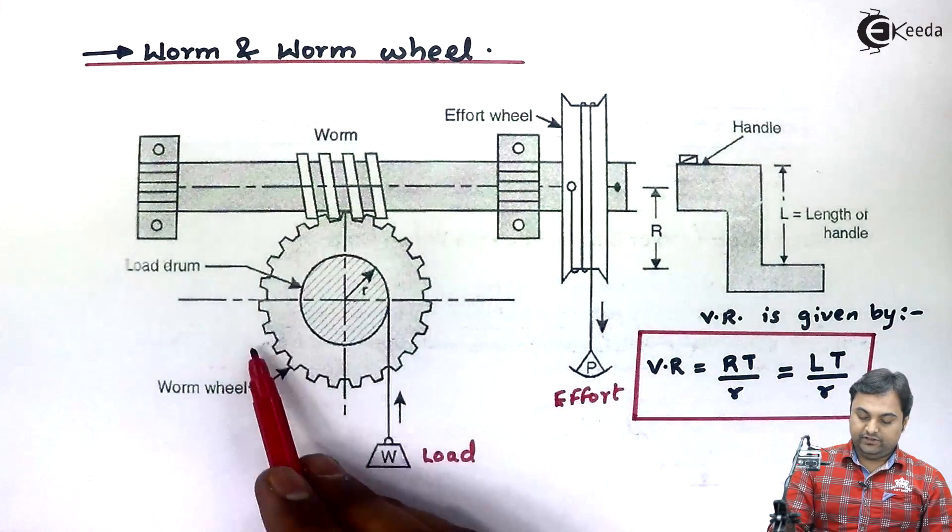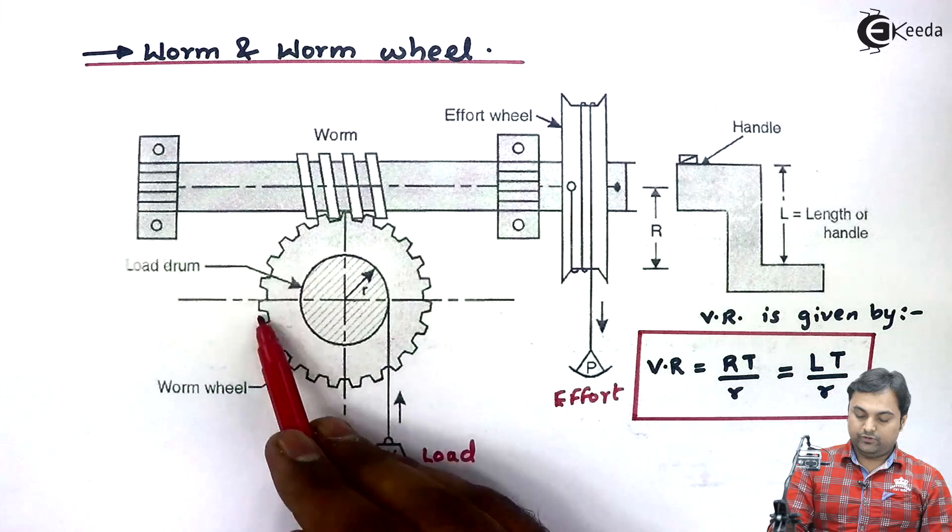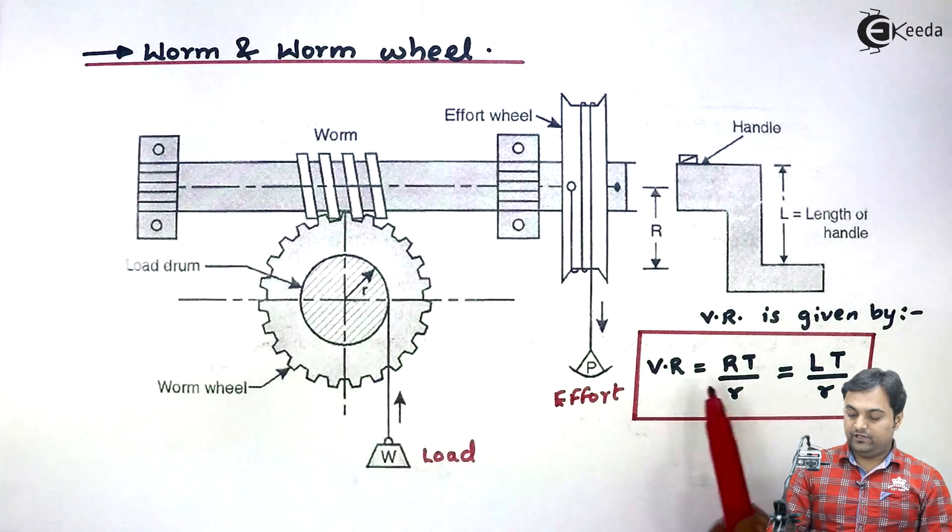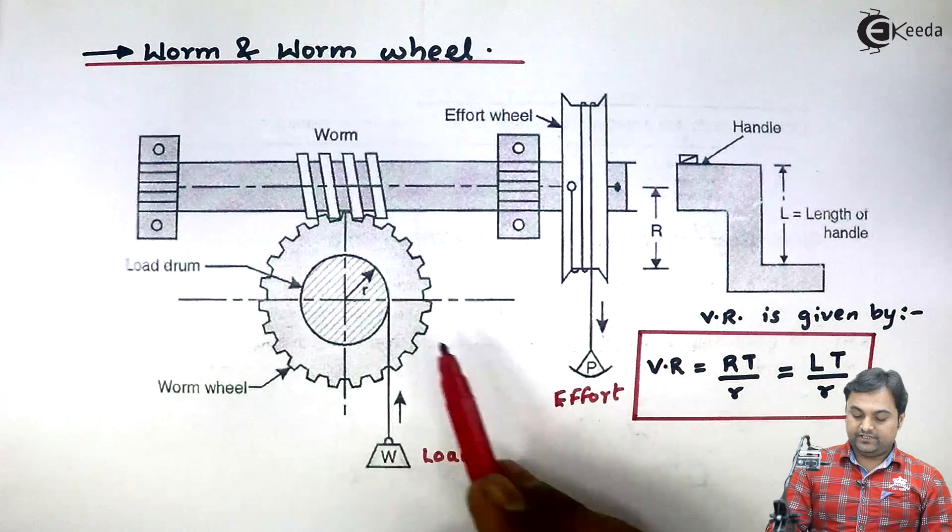Capital T is the number of teeth on the worm wheel, and small r is the radius of load drum.